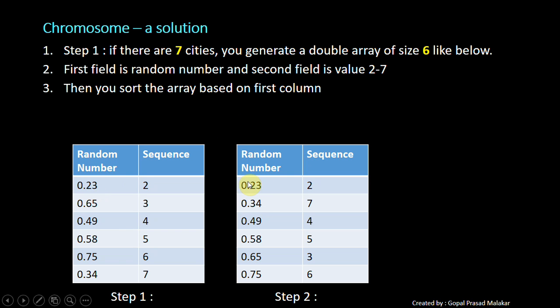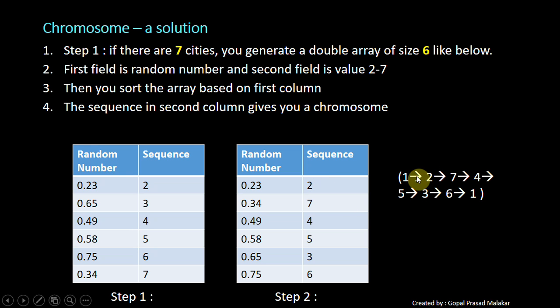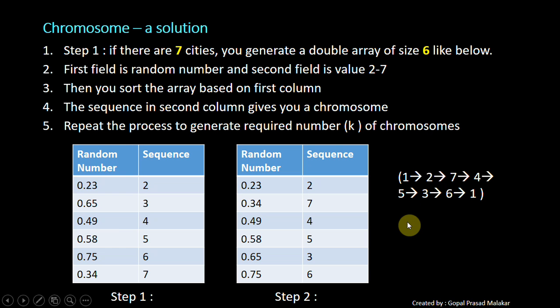Once you have sorted, 0.23 came first, then 0.34 so 7 came here, then 0.49 which is the 4th came here, then 0.58, then 0.65 is bigger than 0.58 so 3 came here, and then 0.75 which is the biggest so 6 came here. This has given you a sequence 1, 2, 7, 4, 5, 3, 6 and then 1. This is an example of a chromosome. You can repeat this process K number of times to get K chromosomes.